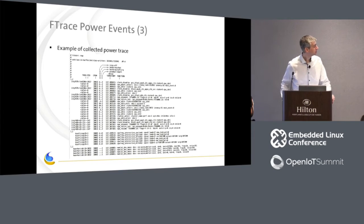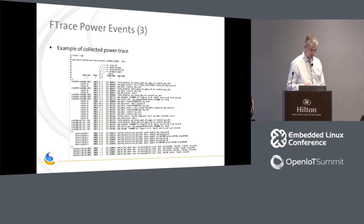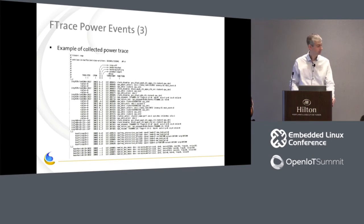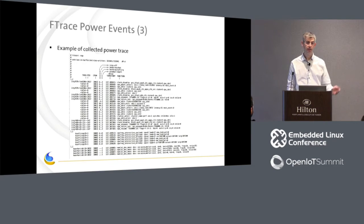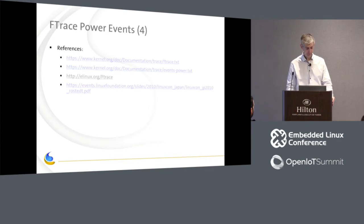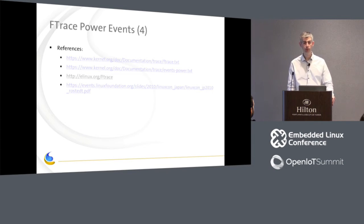Here is an example of an FTrace with power events enabled. There are some CPU frequency events and CPU idle events — this is a trace collected on a real platform. The idea is to write tools that can read this and do the job for us, at least partially. A few references are provided for those interested in learning more about FTrace.